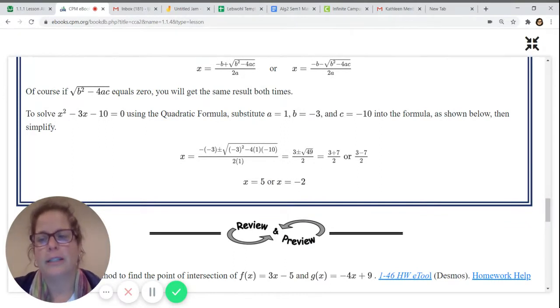x squared minus 3x minus 10 equals zero. We can see a is 1, because there's a 1 in front of that x squared even though we don't see it. b is negative 3. Those signs are really important. You have to include the negative. And c is negative 10.